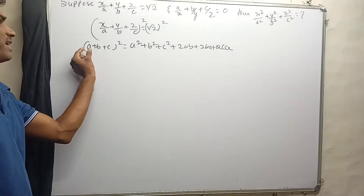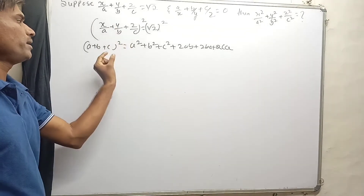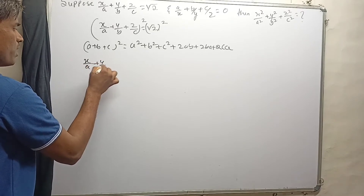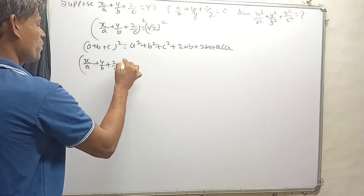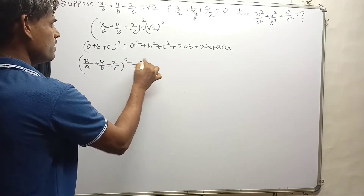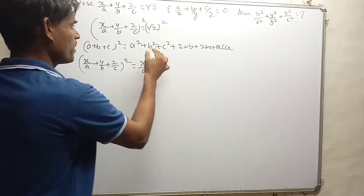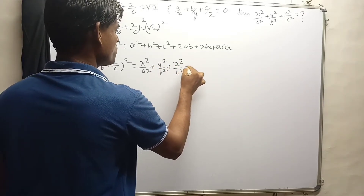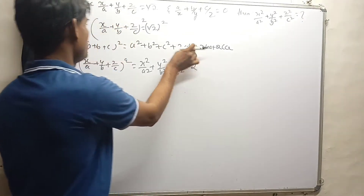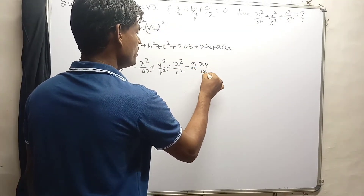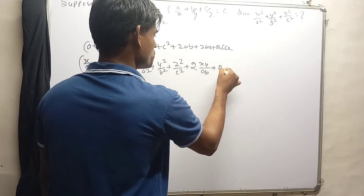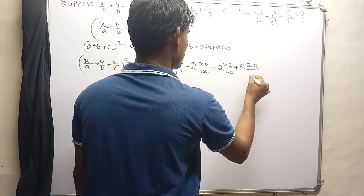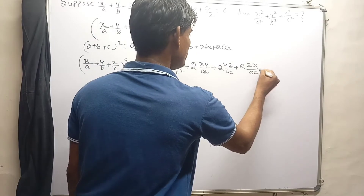So by replacing a with x/a, b with y/b, and c with z/c, we have (x/a + y/b + z/c)² equals x²/a² + y²/b² + z²/c² plus 2(xy/ab) + 2(yz/bc) + 2(xz/ac).